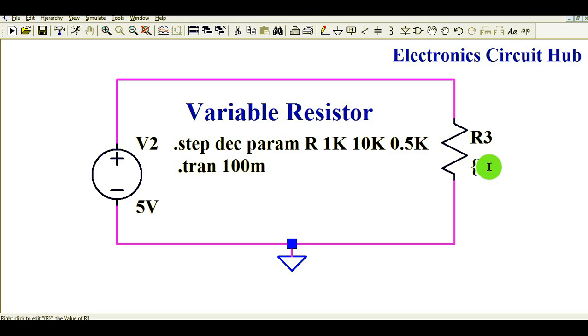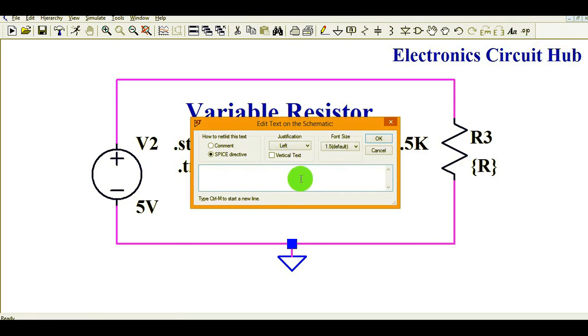To pass a value to this resistance R, what you need to do is, you need to write a SPICE directive. So you have to go in SPICE directive, and then you have to write the command.